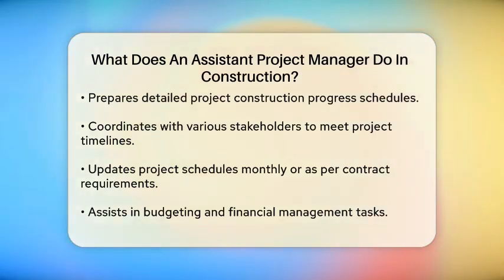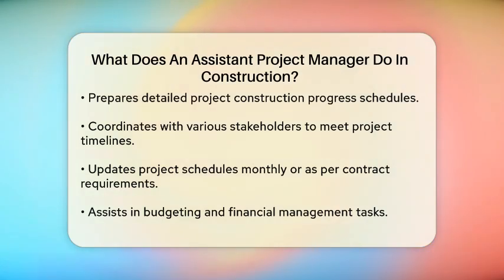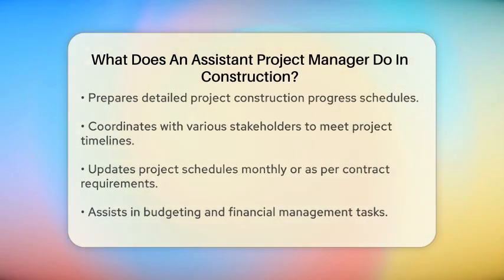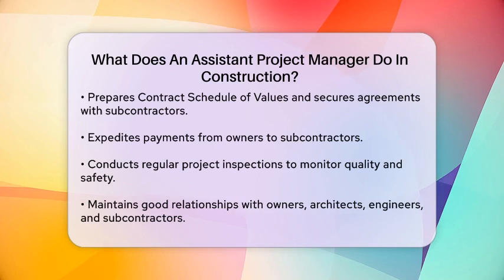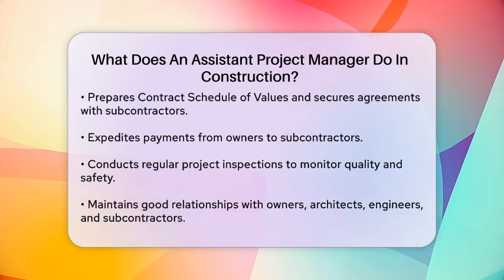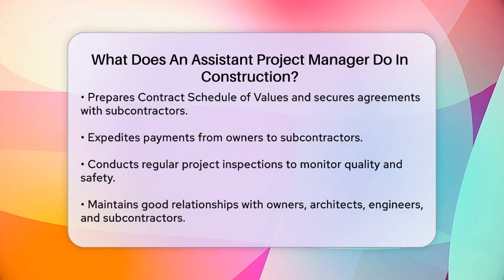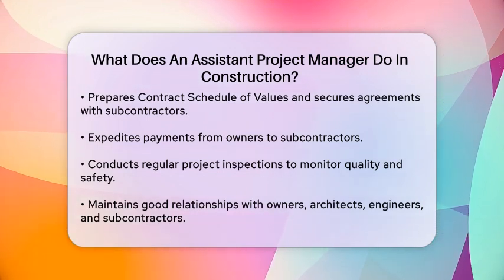Quality control is another critical area. The assistant project manager works with the superintendent to ensure the project is constructed according to contract requirements and specifications. They conduct regular project inspections, monitor the quality of work, and address any safety concerns or other issues that need attention.